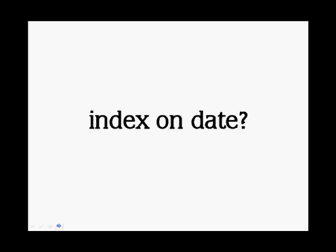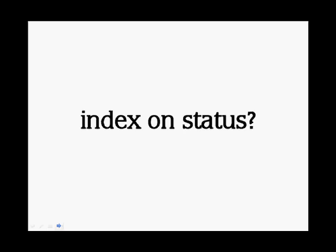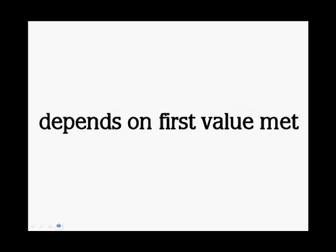It will have to choose, for instance, between using an index on a date — which will be best for common values — and using an index on the status, which is best for infrequent values. For many databases, the choice of the execution plan depends on the first parameter value that is met. It can cause plan instability and queries that run fast in the morning and slowly in the afternoon, if the query has been reparsed with the wrong parameters in between.